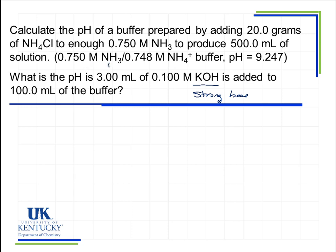This is the base portion of the buffer, and this is the acid portion of the buffer. The first thing we need to do is write the one-way reaction that neutralizes the hydroxide. So OH minus plus NH4 plus is going to produce NH3 plus H2O.